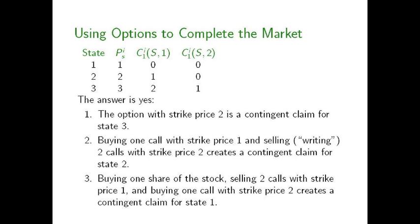The answer is yes. If you take a look at the various patterns of payouts and ask how you can use these various assets to synthesize contingent claims for each of the three states, notice that the call with strike price two pays out a dollar in state three and zero otherwise. So the payoffs for the call with strike price two coincide exactly with those of a contingent claim for state three — the option with strike price two is, in effect, a contingent claim for state three.